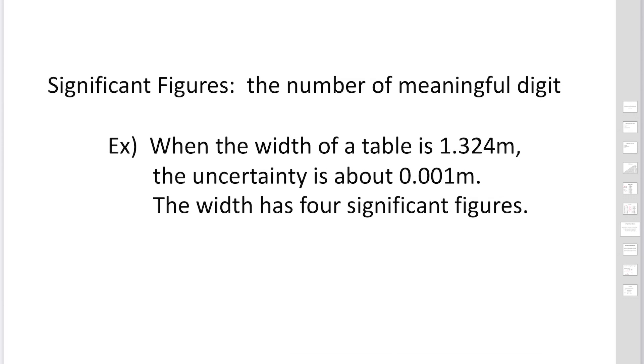Significant figure is the number of meaningful digits. When the width of a table is 1.324 meters measured with tape measures, this number includes errors. It's actually equal to 1.3235 to 1.3244 meters. We're uncertain about the real width in this range. The uncertainty is 0.001 meters, so the width has 4 significant figures: 1, 2, 3, 4.